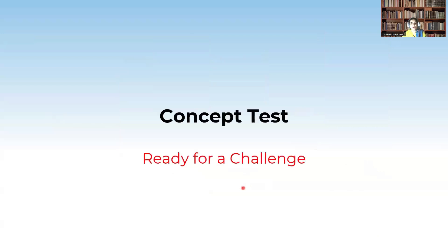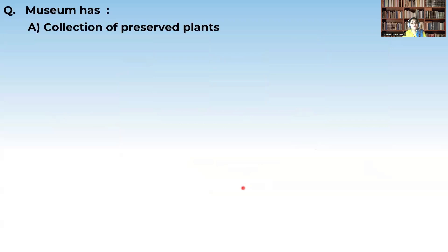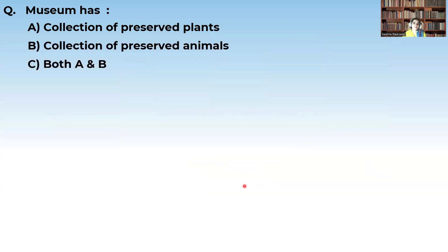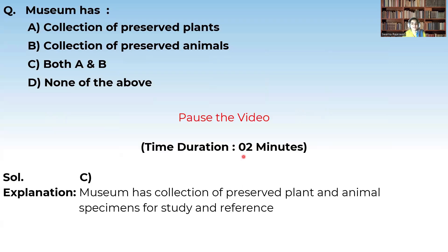Let us take a small concept test. A museum has: collection of preserved plants, collection of preserved animals, both A and B, or none of the above? A museum has both a collection of preserved plants as well as a collection of preserved animals. So the correct answer is C — both A and B.